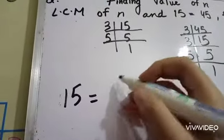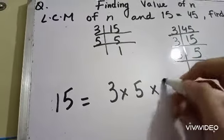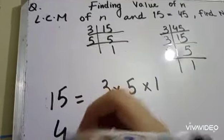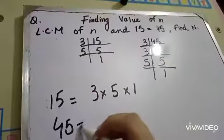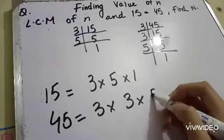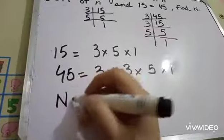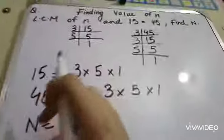So 15 is equal to 3 multiply by 5 multiply by 1, and then 45 is equal to 3 multiply by 3 multiply by 5 multiply by 1. And n, the value of n is not given.